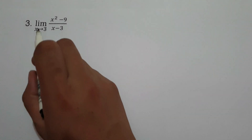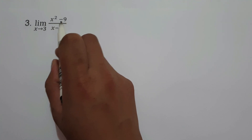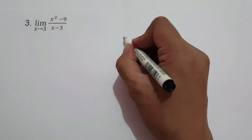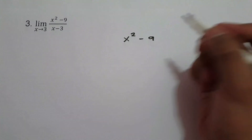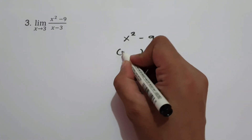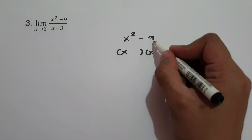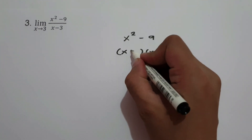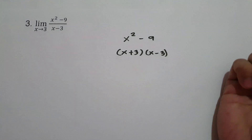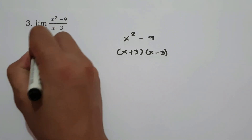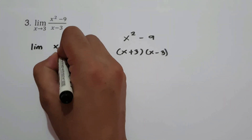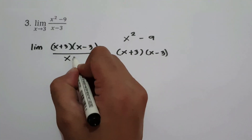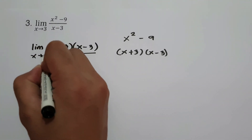On number 3, we have the limit of x squared minus 9 all over x minus 3 as x approaches 3. The factors of x squared are x and x. For negative 9: we need two numbers that multiply to negative 9 and add to 0. That is positive 3 and negative 3. So x squared minus 9 factors as x plus 3 times x minus 3.